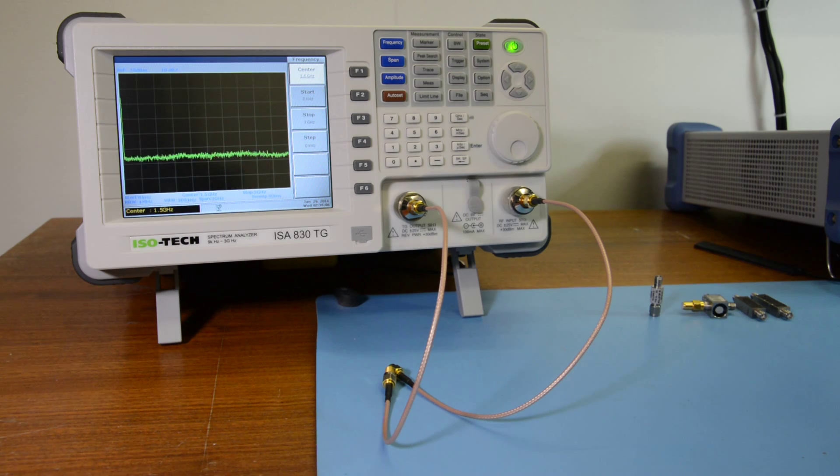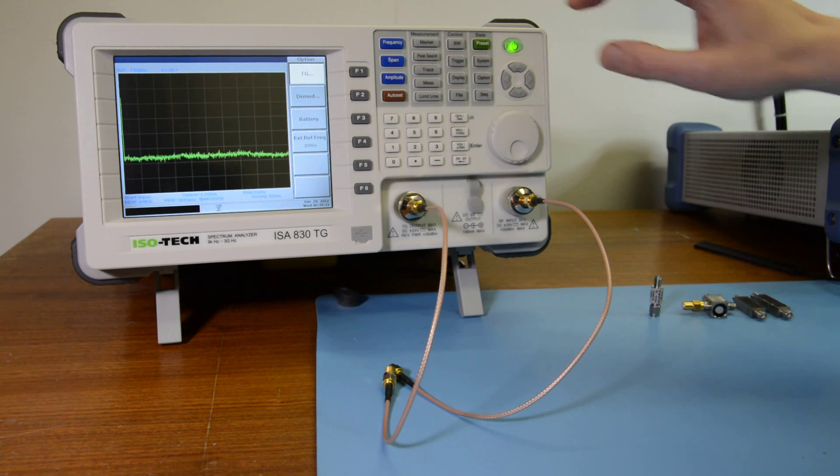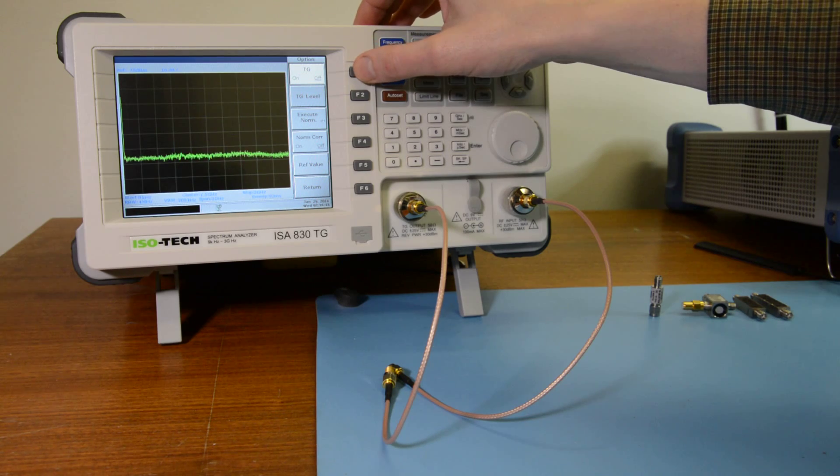Now to enable the tracking generator we need to press the option key, followed by F1 TG, and then F1 again to turn the tracking generator on.